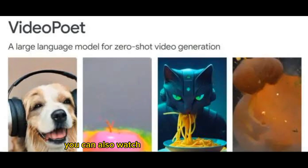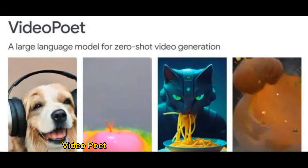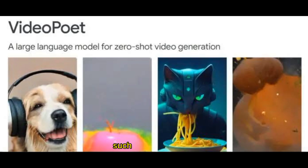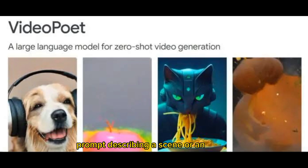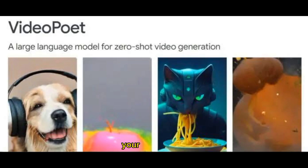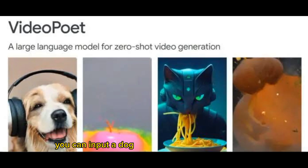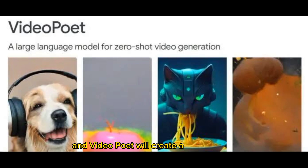You can also watch some examples of videos generated by VideoPoet on YouTube. VideoPoet can create videos for various tasks, such as text-to-video: you can input a text prompt describing a scene or an action, and VideoPoet will generate a video clip that matches your description. For example, you can input "a dog eating popcorn at the cinema" and VideoPoet will create a video of that.